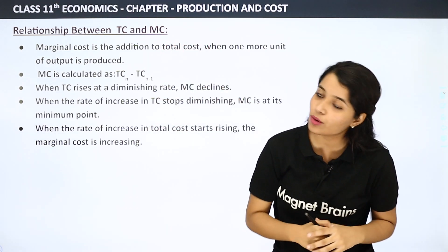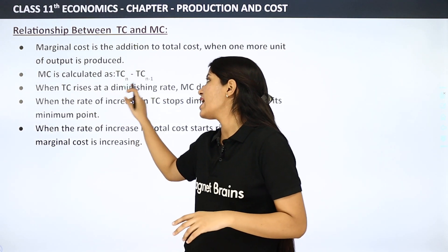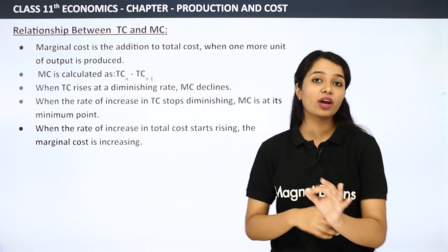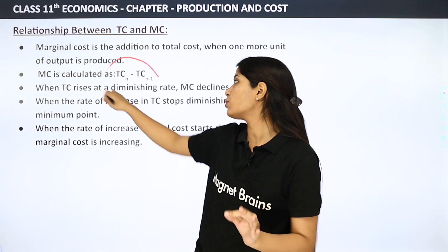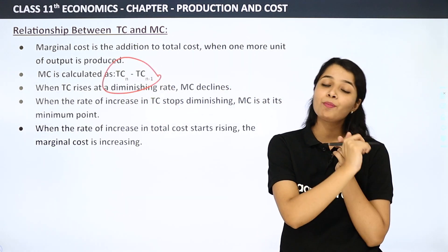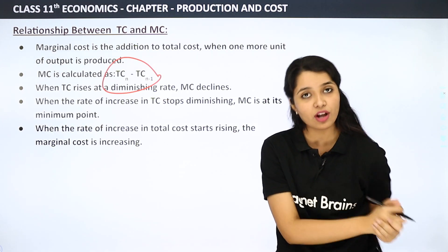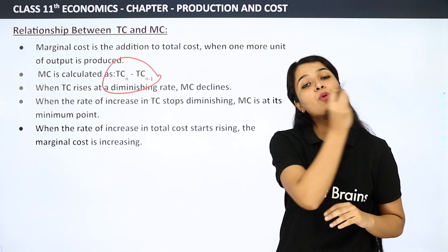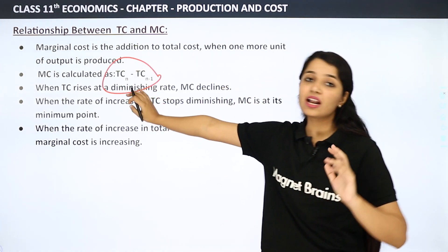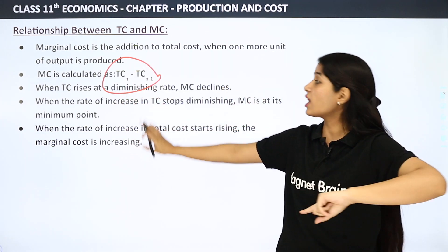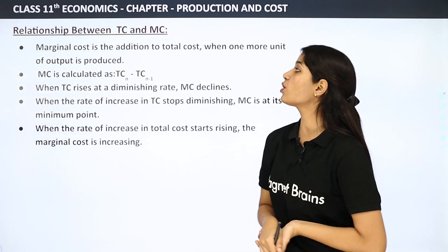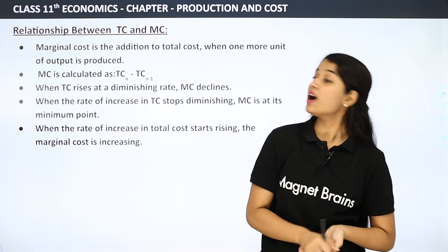How do we calculate marginal cost? It is calculated as TCn minus TCn-1. This formula shows the relationship between marginal cost and total cost — if you want to calculate marginal cost, you do total cost n minus total cost n-1, and your marginal cost will come out.